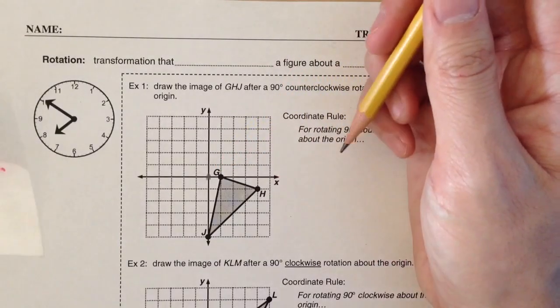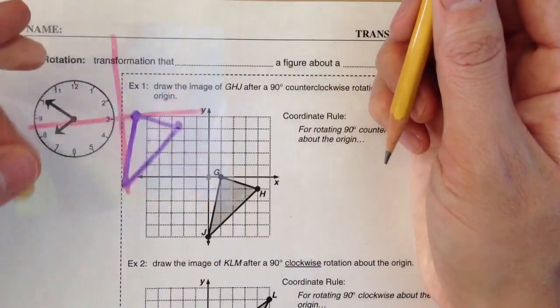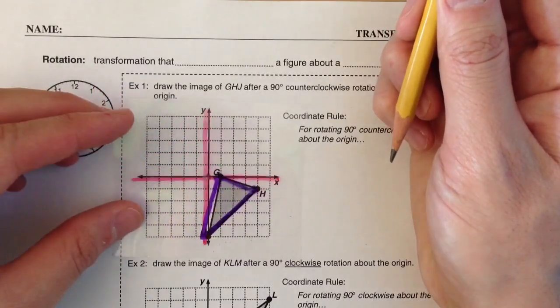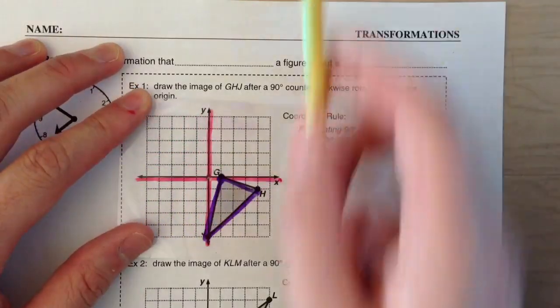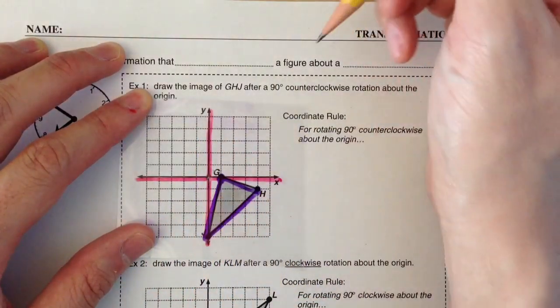So we learned how to rotate it using tracing paper. I'm going to use an example with a transparency so it'll be easier for you to see on the video. But what you're going to do is use your tracing paper, draw the axes and the shape on the tracing paper.